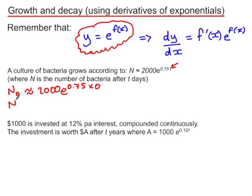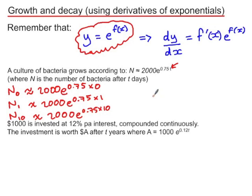After one day, we would substitute in 1 for t. If we want to know how many bacteria there are after 10 days, we would substitute in 10 for t. Now this tells us how many bacteria there are at a particular point in time. But differentiating will tell us the continuous rate of change of bacteria. So at what rate is the number of bacteria increasing or decreasing?